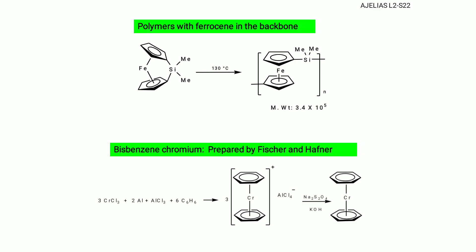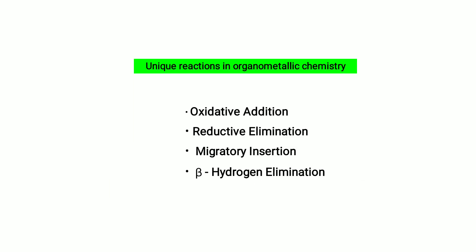Ferrocene can also form polymers with ferrocene in the backbone. Benzene-chromium compounds are prepared by Fischer and Hafner reactions. These are among the unique reactions in organometallic chemistry: oxidative addition, reductive elimination, migratory insertion, and beta-hydride elimination.